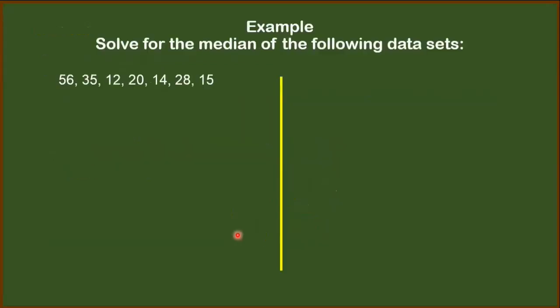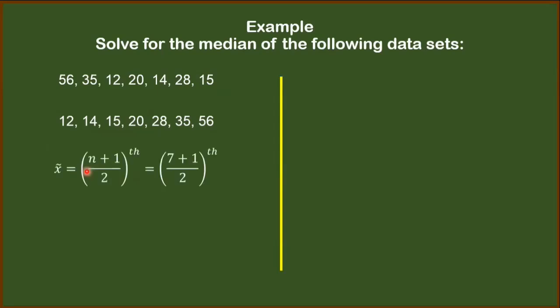We have to solve for the median of 56, 35, 12, 20, 14, 28, and 15. According to the first step, we have to arrange this first in either ascending or descending order. For this example, let's follow the ascending order. This second line shows the ascending order of the data. Once the dataset is arranged in ascending order, we can now use the formula.